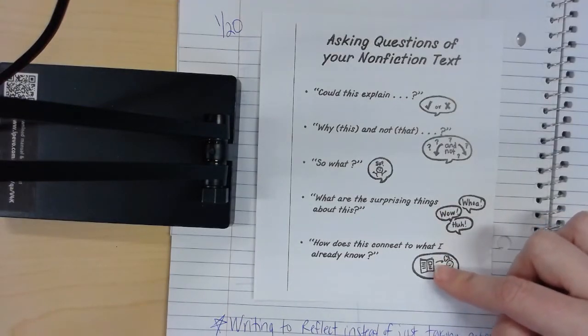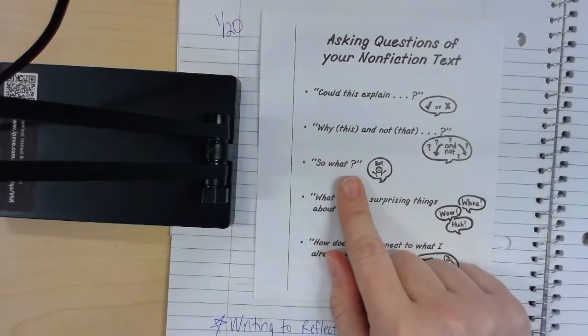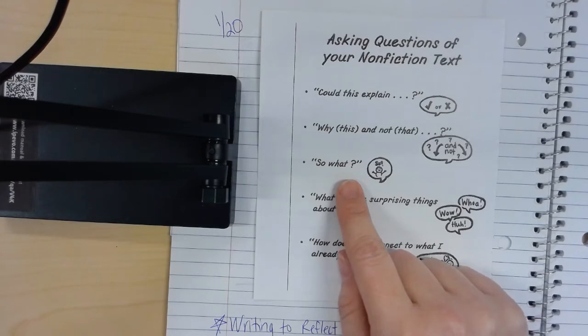So if you're writing down a note or a fact or a statistic or a quote or anything like that, you should be asking yourself, so what? Why did I write this down? I wrote it down because it's important, okay? But why is it important? So I want you to really be thinking about your note-taking. Note-taking as a way to reflect on the topic, not note-taking as a way to just jot down every single fact.